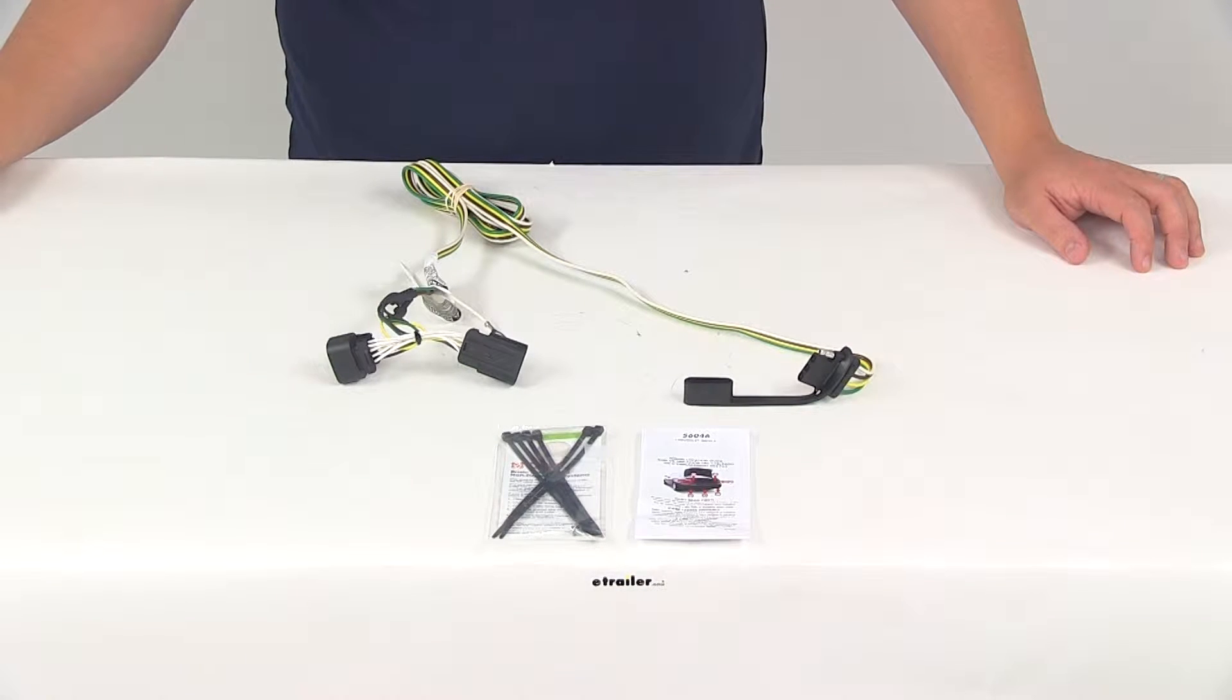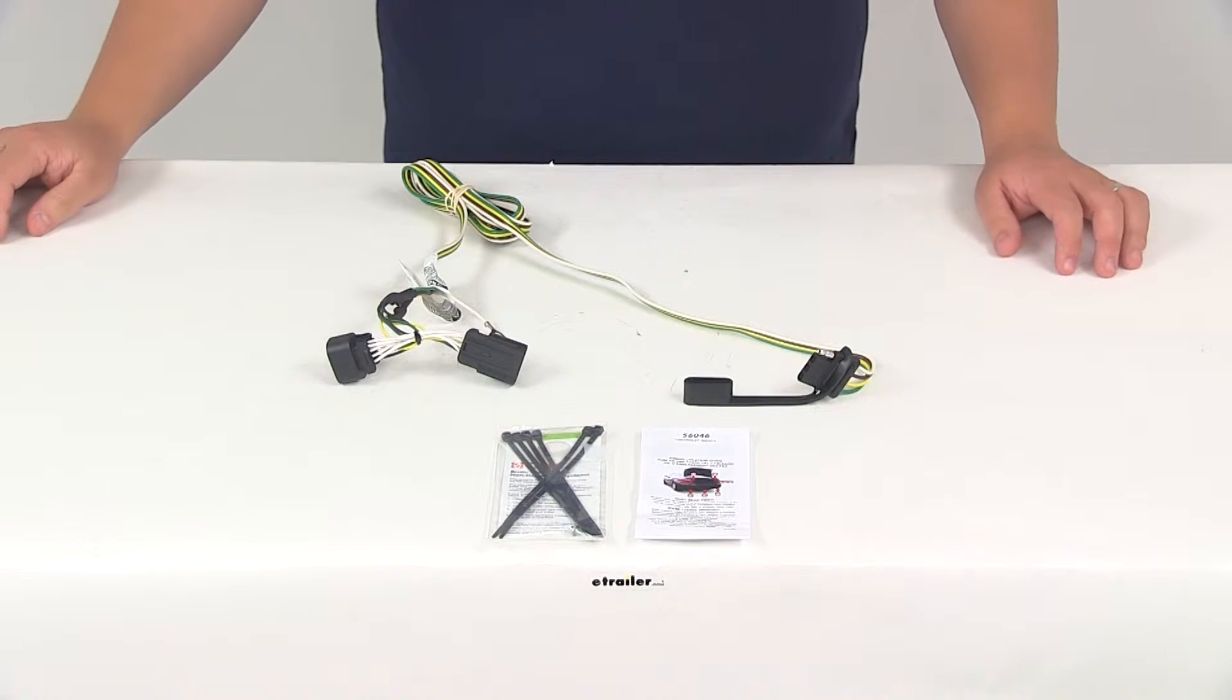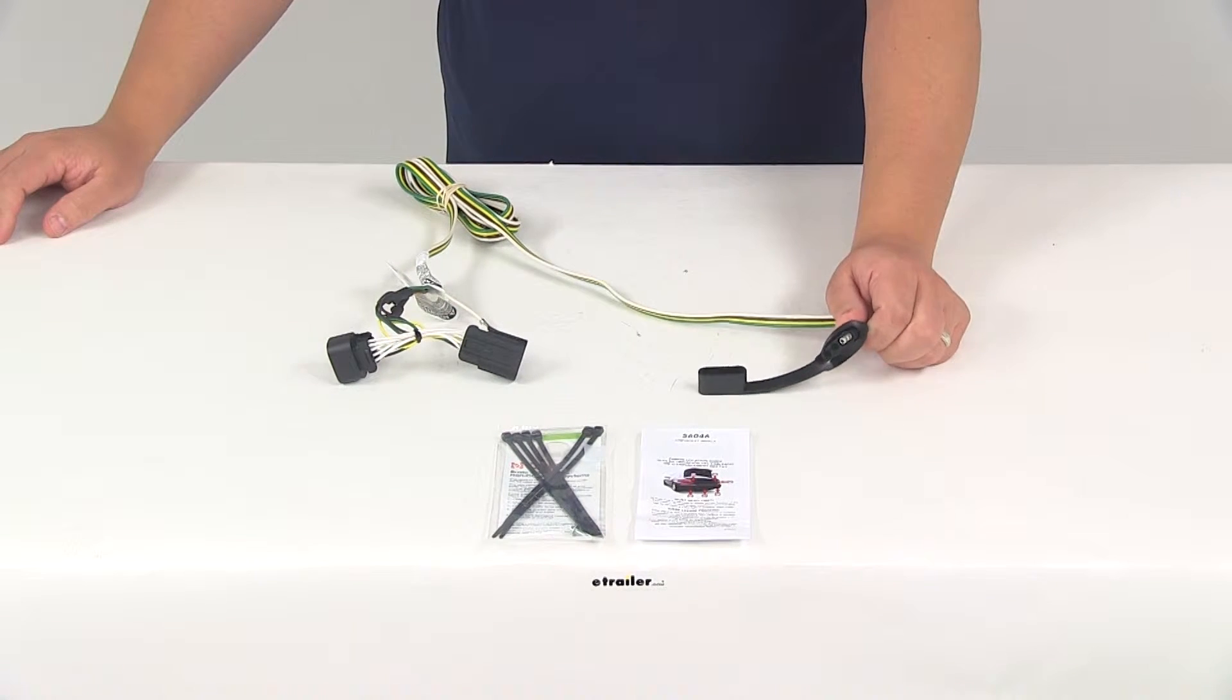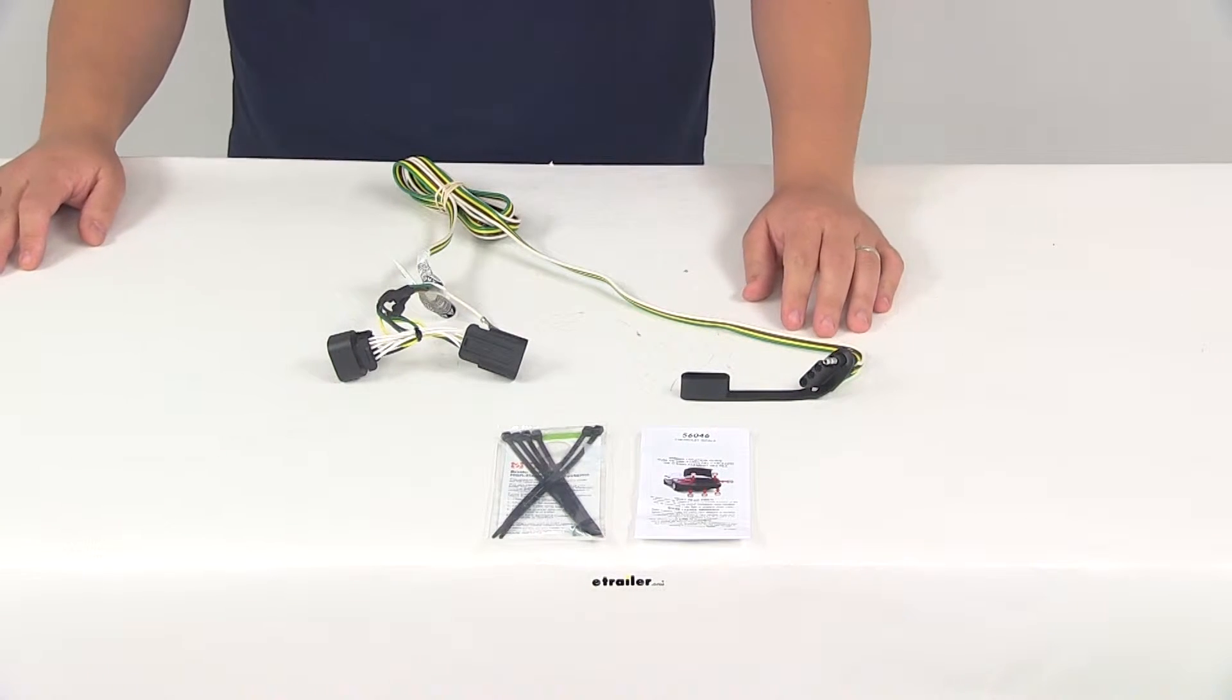Today we're going to be taking a look at part number C56046. This is the Curt T connector vehicle wiring harness with a four-pole flat trailer connector. This fits certain years and models of the Chevrolet Impala.